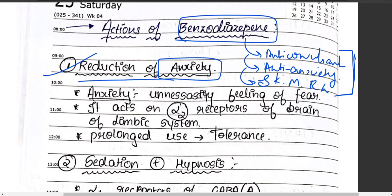Anxiety is an unnecessary feeling of fear. Benzodiazepines reduce anxiety by acting on the alpha-2 receptors of the limbic system. However, an important adverse effect is that when used for longer than three to four days, these drugs cause dependence — you cannot function without them — and tolerance.